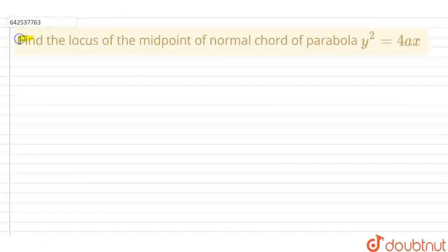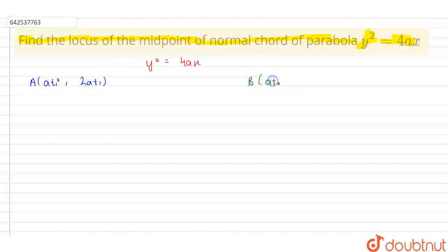Today's question is: find the locus of the midpoint of normal chord of parabola y square equals to 4ax. In the parabola y square equals to 4ax, we can take any point A as at1 square, 2at1 and any point B as at2 square, 2at2.